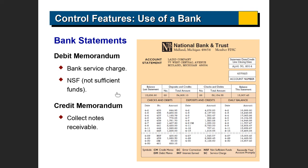The bank statement has certain additions and subtractions from the account that the company may not have recorded. For example, the bank may take a service charge which the company did not record in its books until it received the bank statement. So a $15 or 100 real service charge for the bank account is not going to be recorded until the bank statement is received.